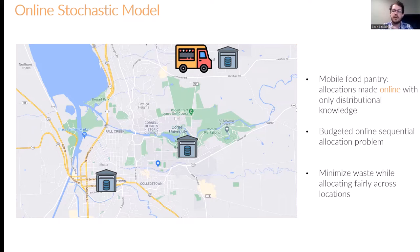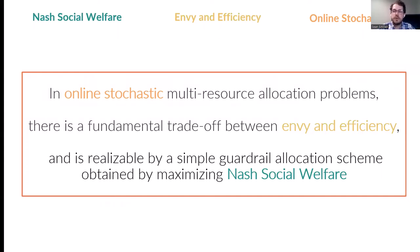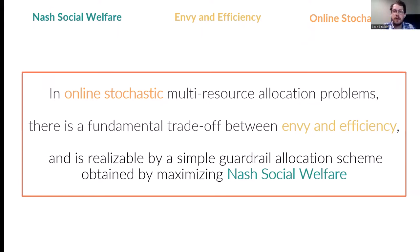The high-level goals of the food bank are twofold. First, they want to minimize waste, ensuring they give out as much of the resources as possible. The second property is envy or efficiency, which ensures equity and care across the different locations and individuals. The punchline of the paper is that in these online stochastic multiple resource allocation problems, there is a fundamental trade-off between these two notions of envy and efficiency, and this trade-off is realizable by a simple allocation scheme obtained by maximizing what's called the Nash Social Welfare.